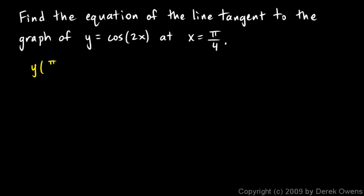So y of π over 4 is going to be cosine of 2 times π over 4, which is just obviously the cosine of π over 2. And cosine of π over 2 is 0.